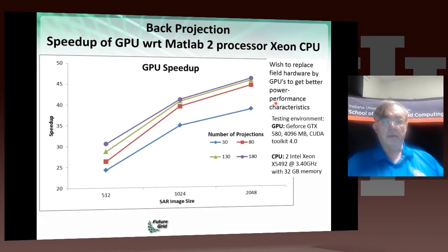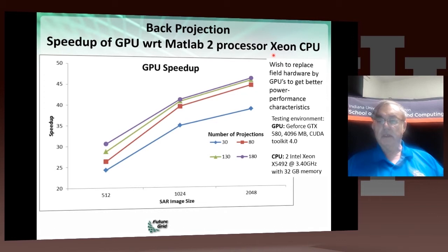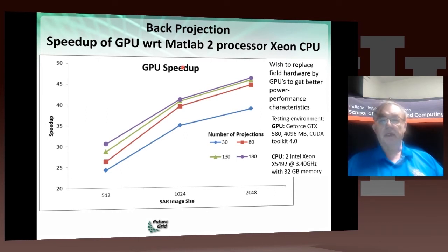It's important to note that when we deploy these sensors in the field, there are lots of issues, like the amount of power being limited. So it's interesting to look at the use of GPUs, which are more power efficient. Here are some plots of the speed-up you get on a GPU. Rather than having several ordinary Intel CPUs, you can add a GPU and get as much processing as you want, but at lower electrical power cost.